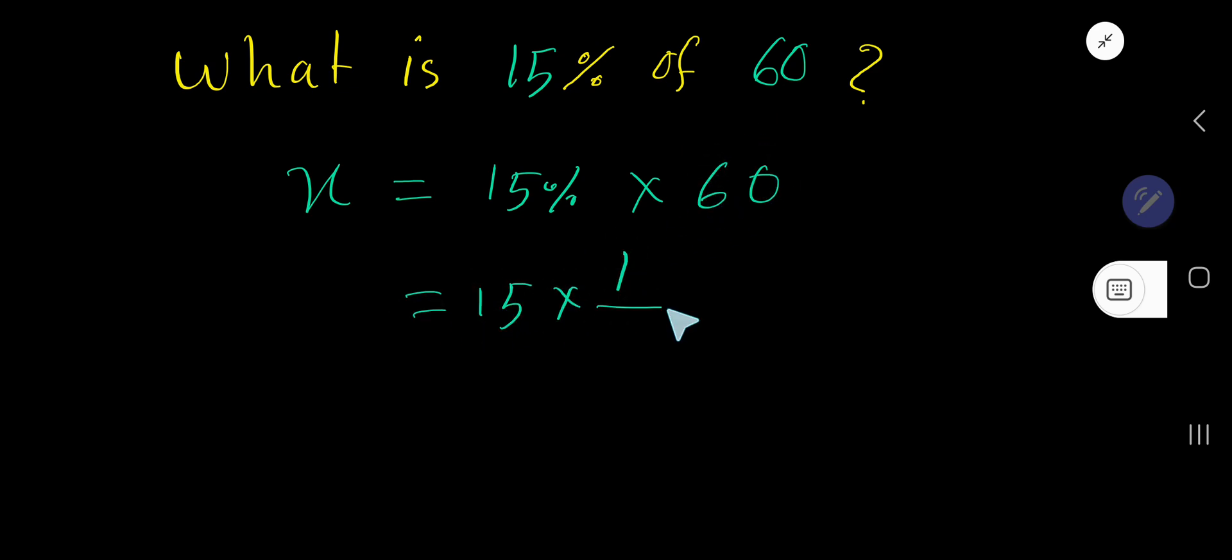Just rewrite it. Percent means 1 over 100 times 60. Now cancel this 0, this 0.